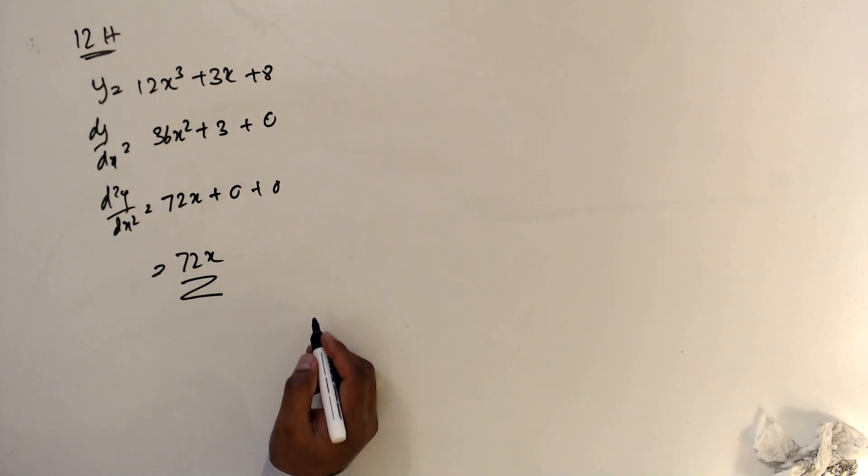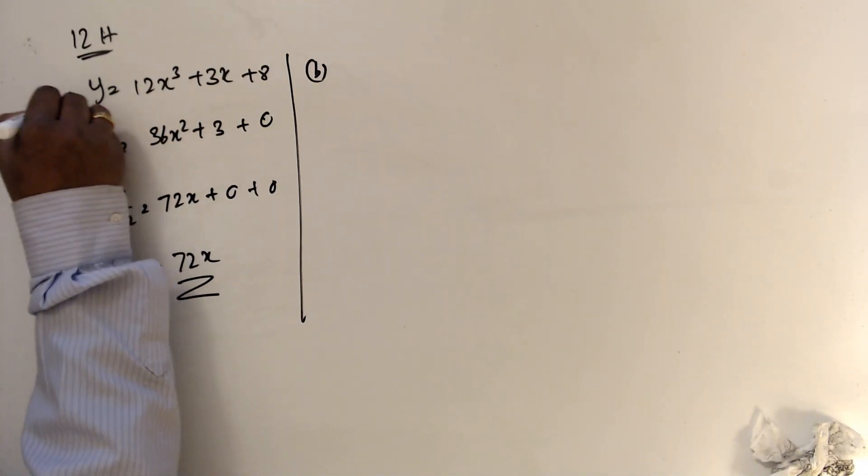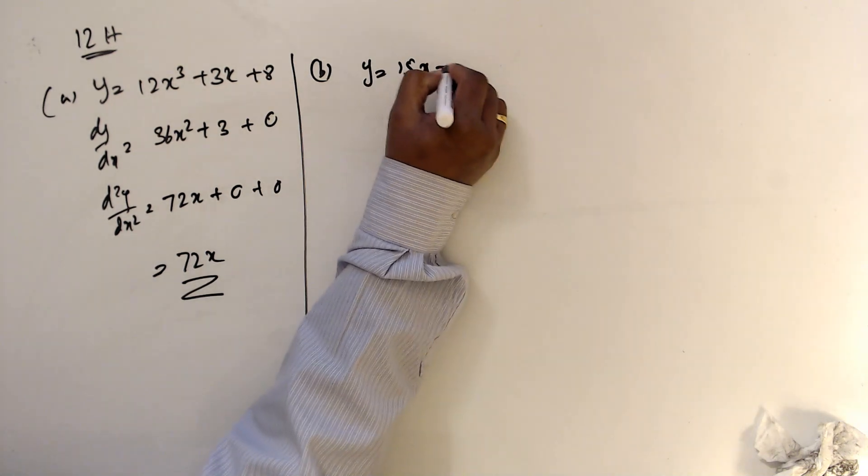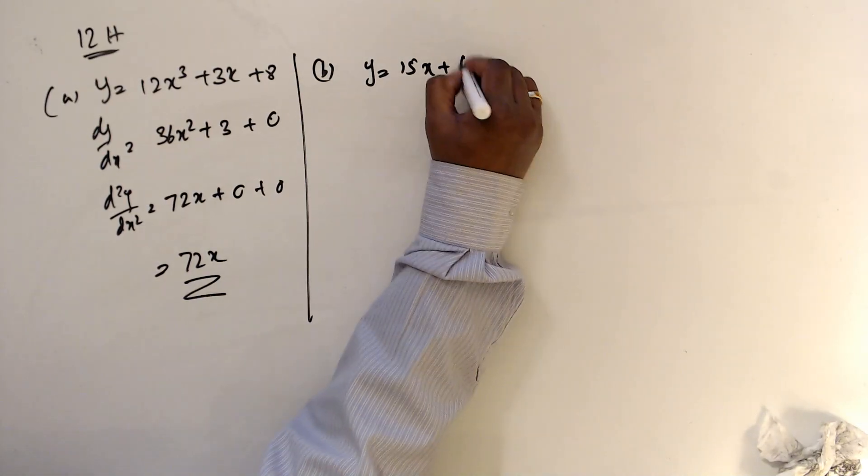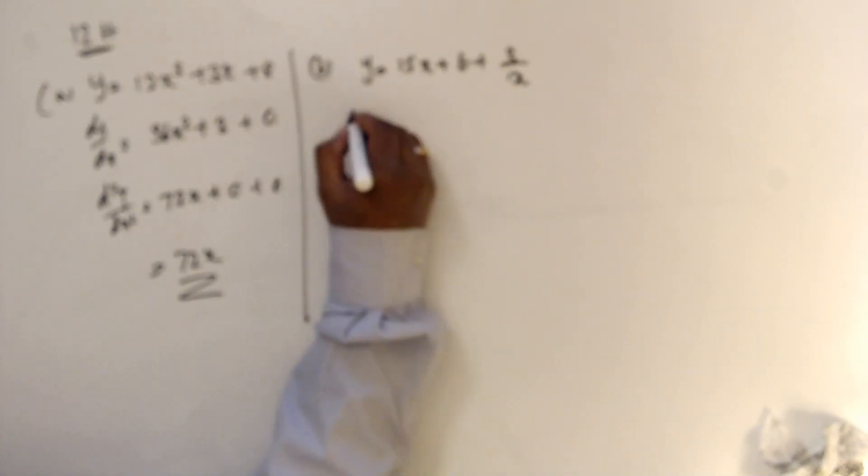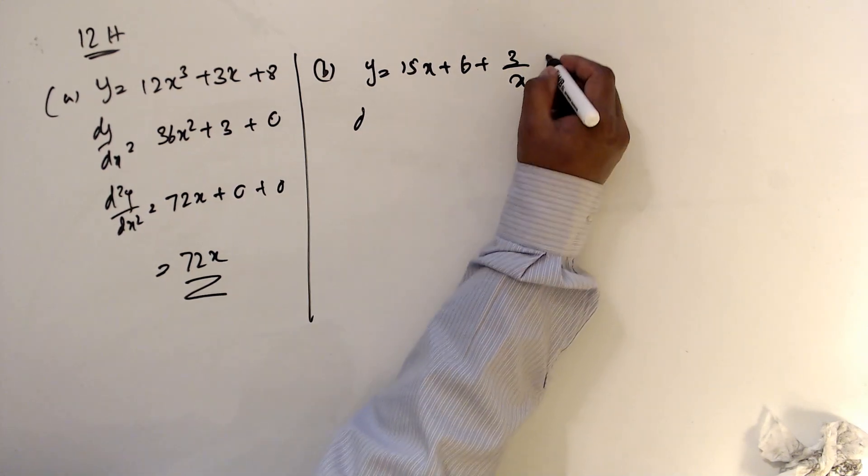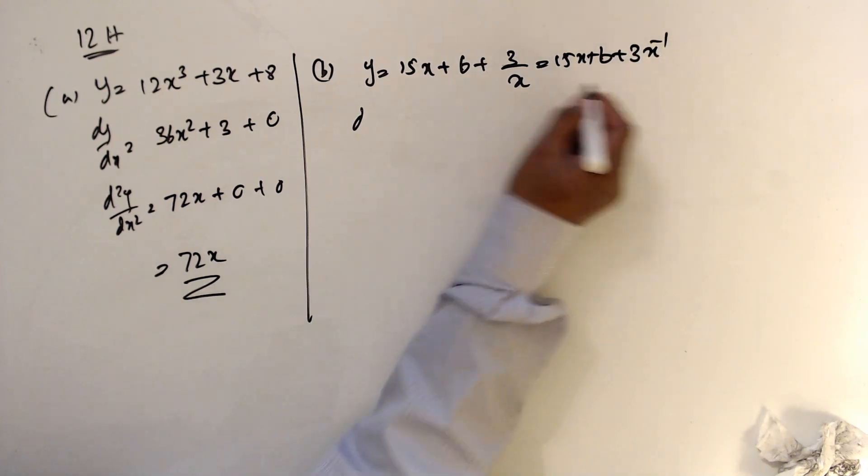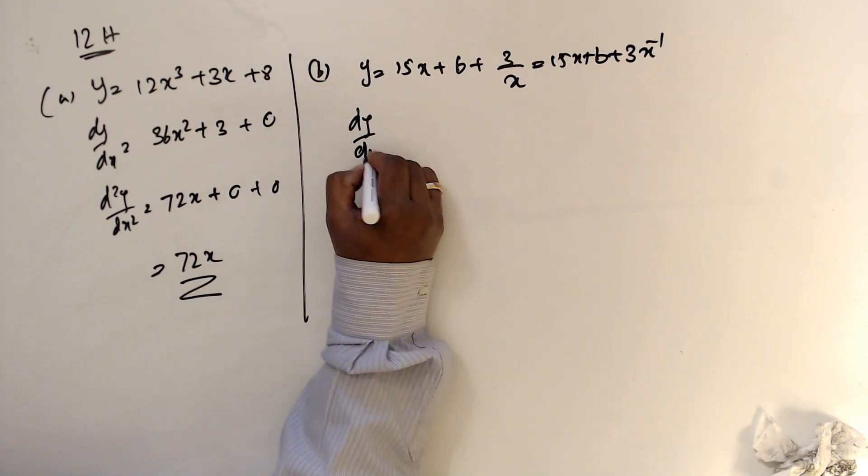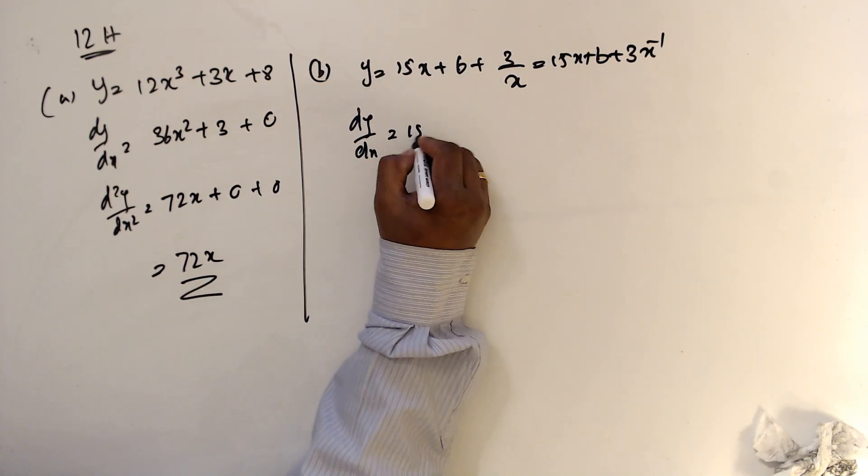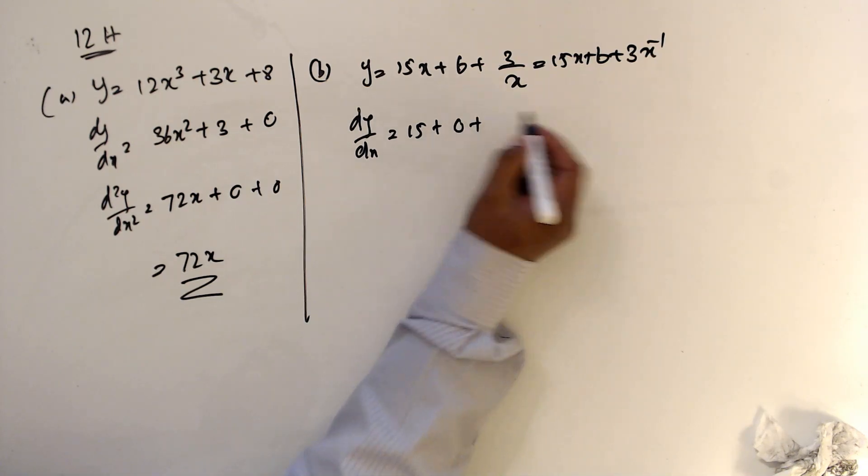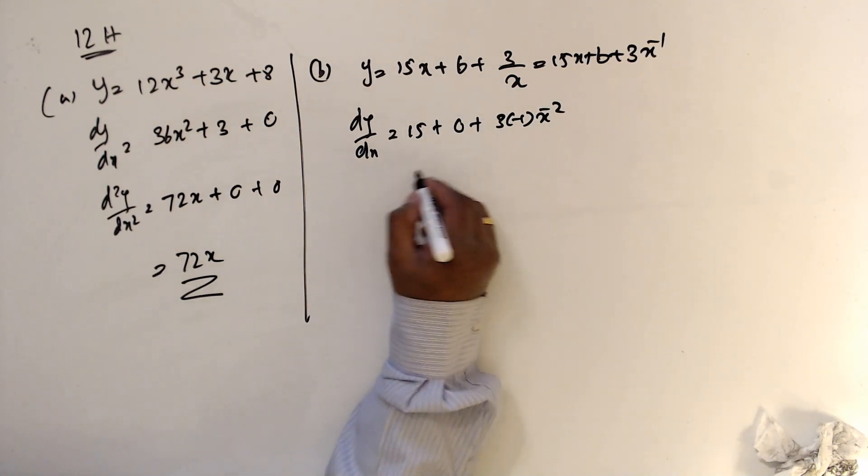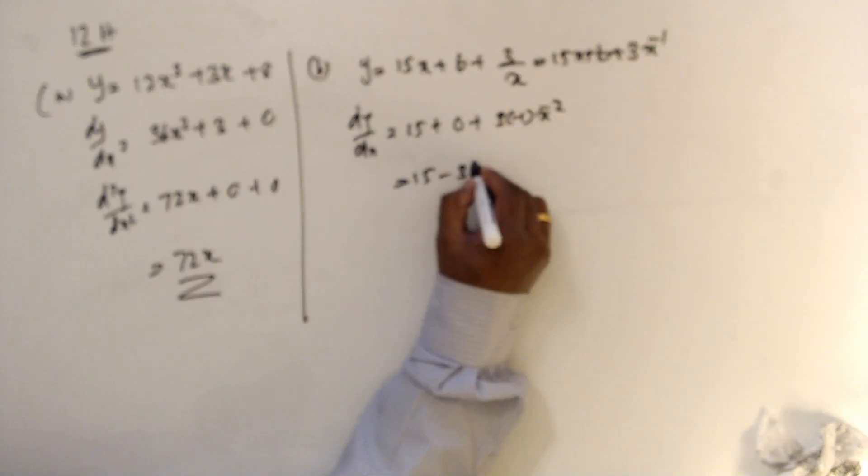And question number b. y equals 15x plus 6 plus 3 over x. So then dy over dx, we can write 15x plus 6 plus 3x to the minus 1. 15 plus 6 becomes 0, and this is 3 times minus 1, x to the minus 2, which is 15 minus 3x to the minus 2.